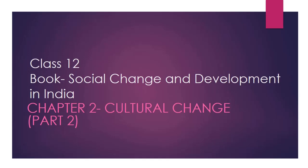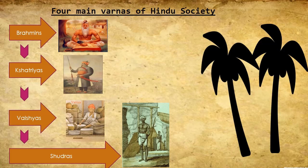Before we start with sanskritization, we need to understand the four main varnas of the Hindu social system. These are the four main varnas: first you have Brahmins, then Kshatriyas, then Vaishyas, and finally Shudras. This is the typical hierarchy present in society — Brahmins at the top and Shudras at the bottom. The most pure caste, as it is believed, are the Brahmins.